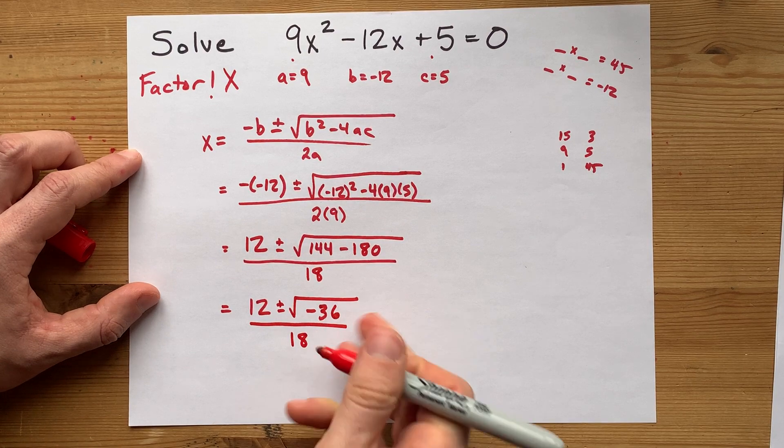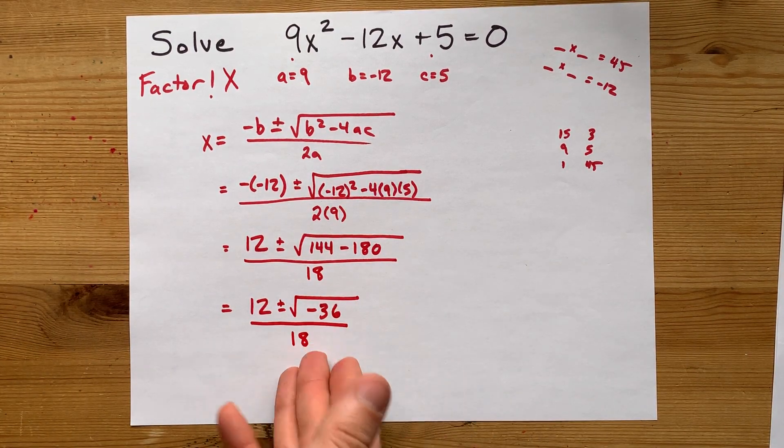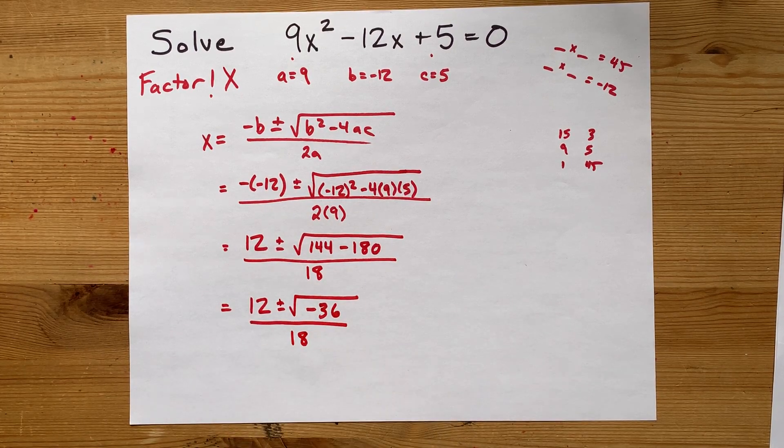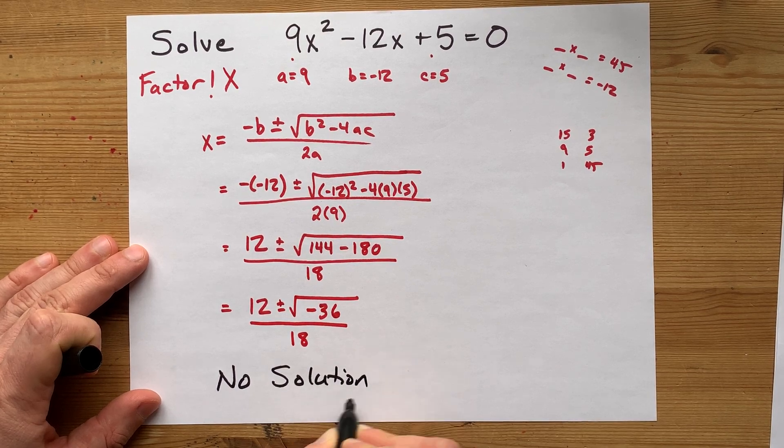Now, you can't take the square root of a negative. Generally, when you're learning the quadratic formula for the first time, at least that's what the teachers tell you. And so your job here is to say that there is no solution to this.